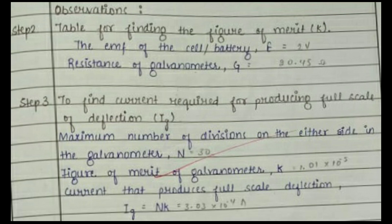This image shows the observations that have been obtained after the practical has been performed. So first, the figure of merit has been found out and for the second, the current required for producing full-scale deflection has also been found out.